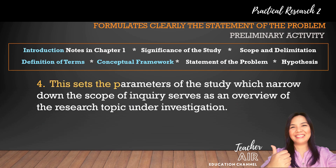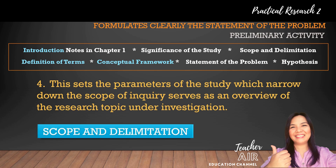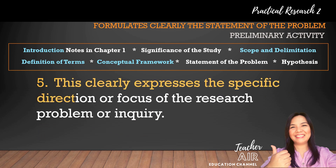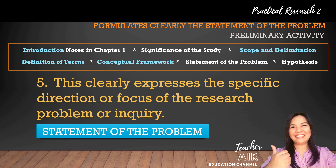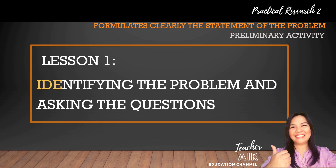Number four, this sets the parameters of the study which narrow down the scope of inquiry and serves as an overview of the research topic under investigation. The answer is scope and delimitation. Number five, this clearly expresses the specific direction or focus of the research problem or inquiry. The answer is statement of the problem. So, lesson one again is identifying the problem and asking the questions.